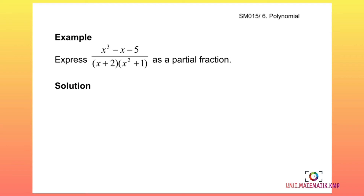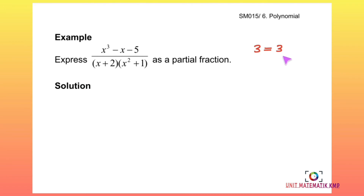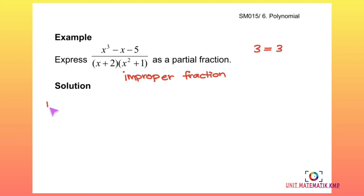For the last example, we want to express the given expression as a partial fraction. As usual, we first determine whether it is proper or improper. The highest degree of the numerator is 3, and if we expand the denominator the highest degree is also 3. Since the degrees are equal, this is an improper fraction, so we must perform long division first.